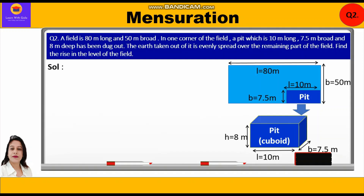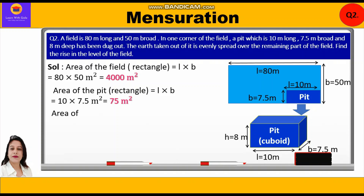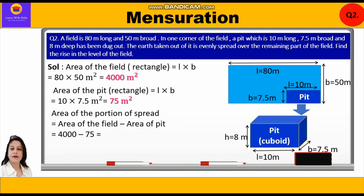Now let's start with the solution. The area of the field, which is rectangular, is length × breadth = 80 × 50 = 4000 m². The area of the pit dug in the corner is also length × breadth = 10 × 7.5 = 75 m². The area of the portion over which the earth is spread is area of the field minus the area of the pit: 4000 − 75 = 3925 m².